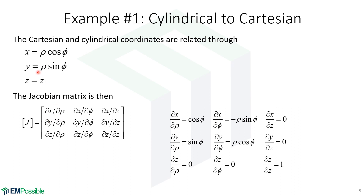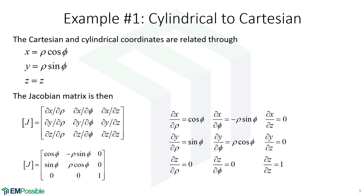Now DY/D-rho: taking the partial derivative of the Y equation with respect to rho gives sine phi. With respect to phi, that's rho cosine phi. With respect to Z, there is no Z, so the partial derivative is zero. And finally, the partial derivative of Z with respect to rho and phi — there is no rho and phi in Z equals Z, so those are zero — and the partial derivative of Z with respect to Z is just one. Throwing all that back into our Jacobian matrix gives us the Jacobian for cylindrical to Cartesian.